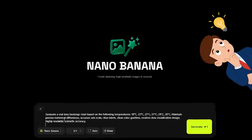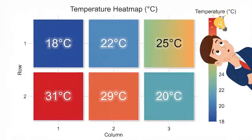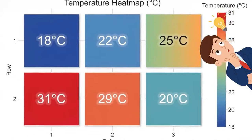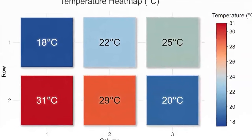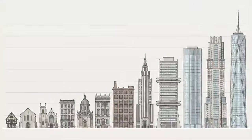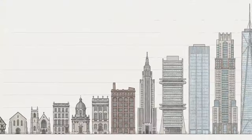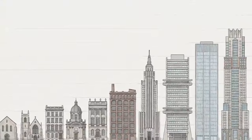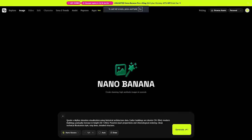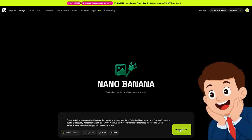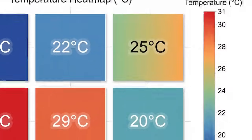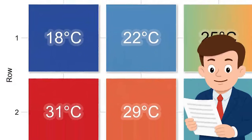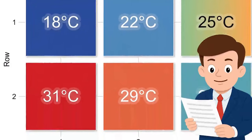Next, we test how the model handles structured information. We request a temperature visualization using actual numerical data, a city skyline based on historical architectural changes, and a scaled scientific diagram with accurate labels. The model preserves numerical relationships, proportions, and structured logic while generating clean and readable visuals. It doesn't simply draw — it interprets the meaning behind the data and represents it with precision.